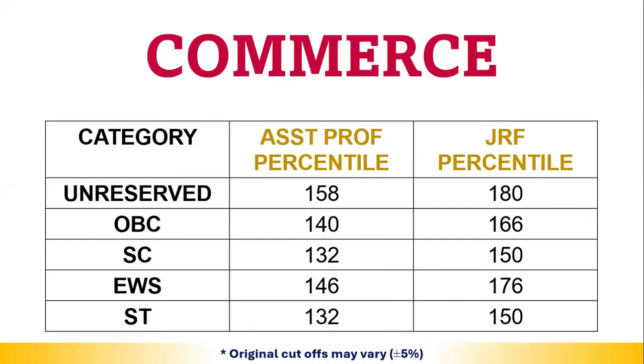For the final subject — for the general category students, the Assistant Professorship cutoff and JRF percentile are provided. JRF will be 180.